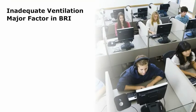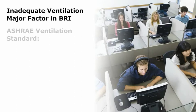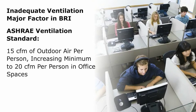Inadequate ventilation has been identified as a major factor in BRI. Opening a building up to outside air can result in the need for greatly increased energy use to properly heat, cool, humidify, and distribute that air. In addition, already conditioned air in the building is lost to the outside. ASHRAE has attempted to address both IAQ and energy conservation concerns by revising its ventilation standard to provide a minimum of 15 cubic feet per minute (CFM) of outdoor air per person, increasing this minimum to 20 CFM per person in office spaces.